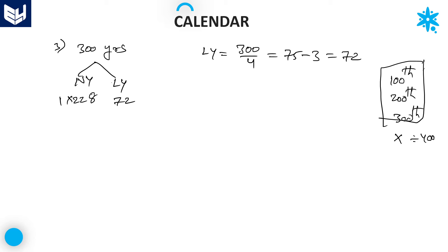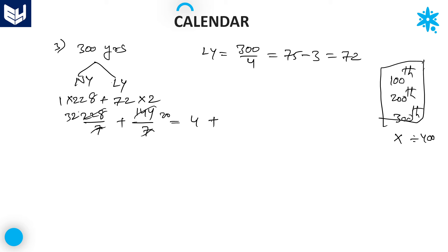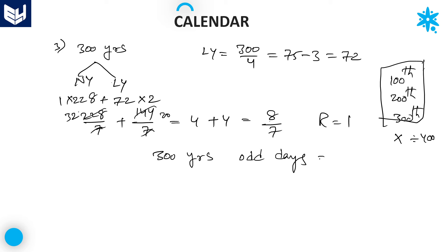Multiply: 72 × 2 = 144 days, and 228 × 1 = 228 days. Dividing by 7: 228 divided by 7 gives a remainder of 4, and 144 divided by 7 gives a remainder of 4. Adding: 4 + 4 = 8. Since 8 is greater than 7, divide by 7 again — the remainder is 1. Therefore, number of odd days in 300 years is equal to 1.